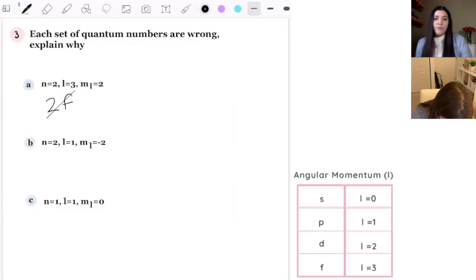So now we have n equals 2, l is 1, so p. So for this one, it's 1, so it'd be negative 1, 0, 1. So we don't have a negative 2. Exactly. The m sub l. Yeah. That's the wrong one. Okay.